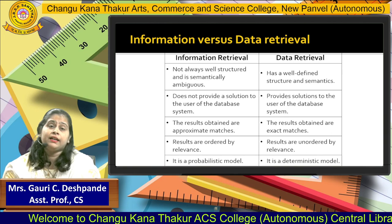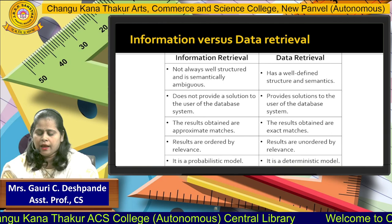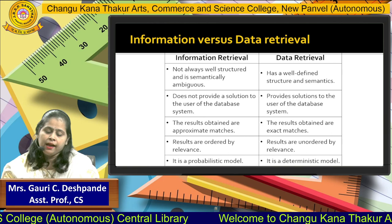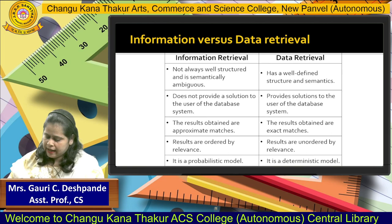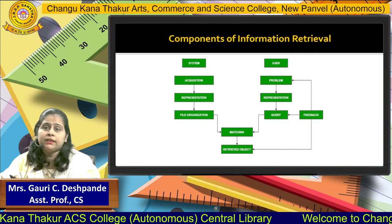The next difference is that in IR, results are ordered by relevance — we get relevant data. In data retrieval, results are unordered by relevance. Finally, IR is a probabilistic model and data retrieval is a deterministic model. These are the differences between IR and DR.